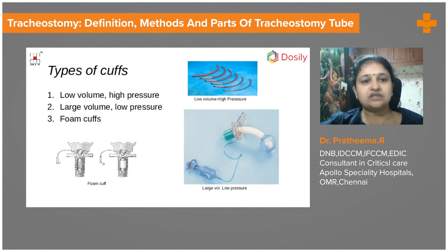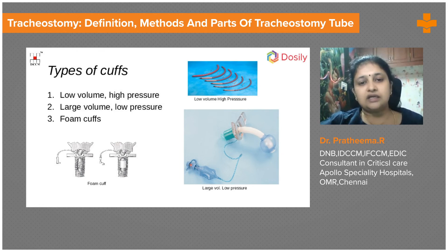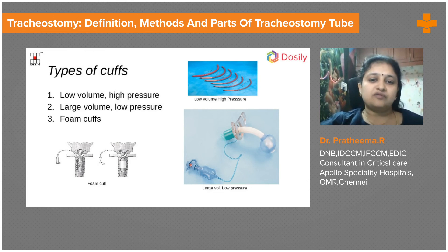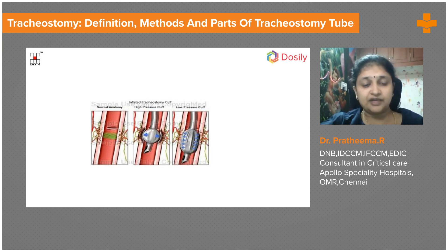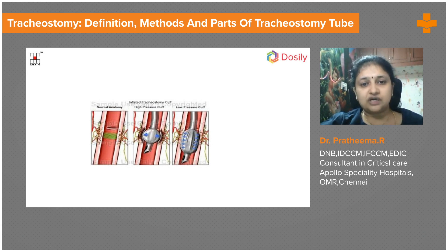There are different types of cuffs. Initially, low volume high pressure cuffs were used, but it was found that the high pressure caused tracheal mucosal necrosis and reduced blood flow, leading to stenosis. As a result, large volume low pressure cuffs were developed. A high pressure low volume cuff transmits significant pressure directly onto the tracheal mucosa, causing low blood flow and mucosal injury. In contrast, a low pressure cuff spreads pressure along the tracheal walls, reducing direct pressure on the mucosa and preventing necrosis.